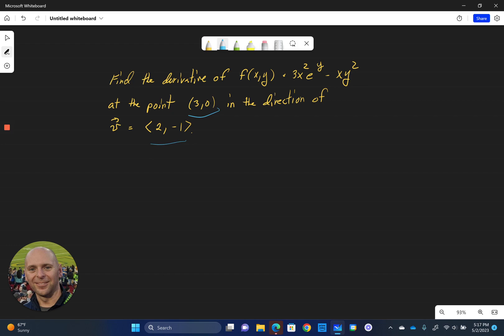One thing to keep in mind is this vector that we work with here must be a unit vector, so we'll have to adjust that vector when we use it in the dot product. Now the magnitude of v here is equal to the square root of 5, so that means we can adjust this and make v equal to the vector 2 over root 5 and negative 1 over root 5.